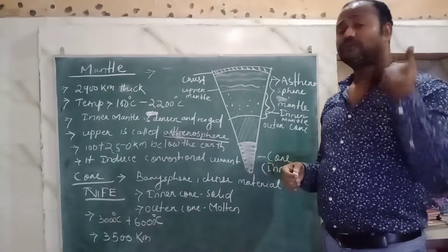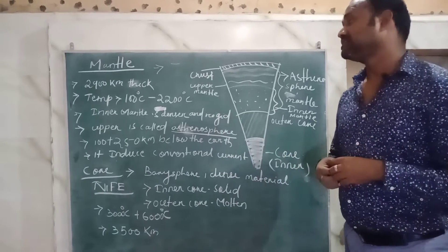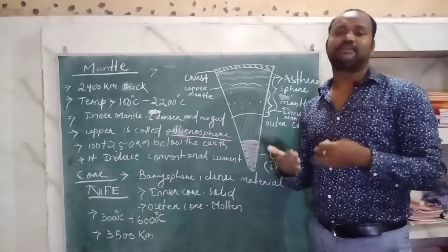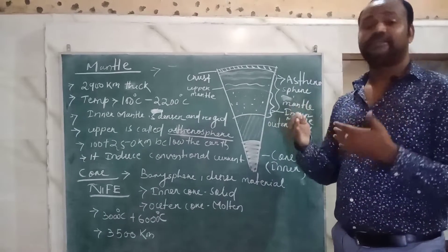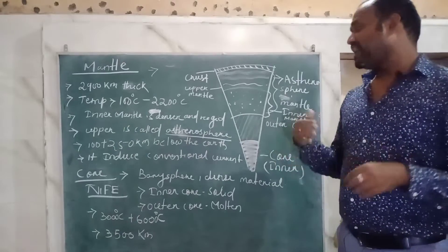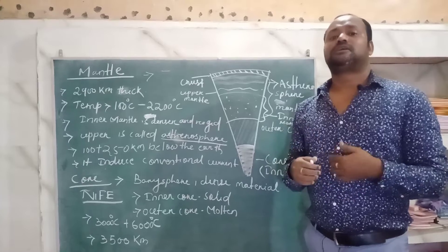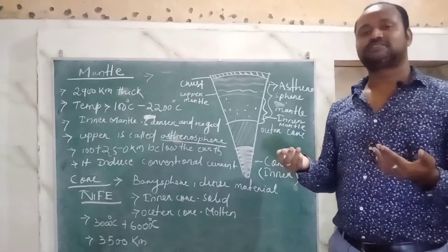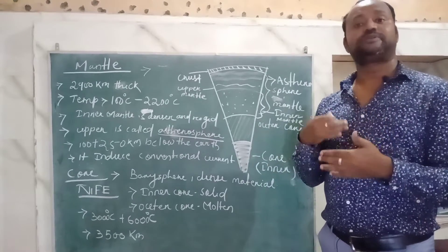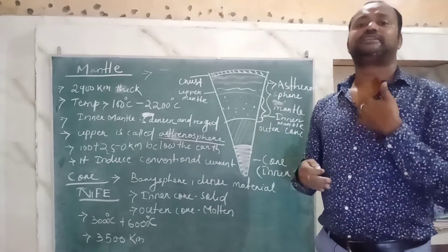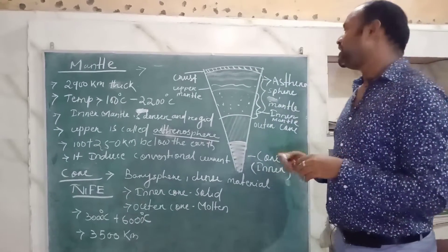The lower mantle is made up of denser material, while the upper mantle — the asthenosphere — is made up of comparatively less dense material and ranges from about 100 to 250 kilometers. The asthenosphere contains some magma — liquid material — and it conducts convection currents. Convection current occurs due to the movement of particles caused by variation in temperature. This produces a huge amount of energy.